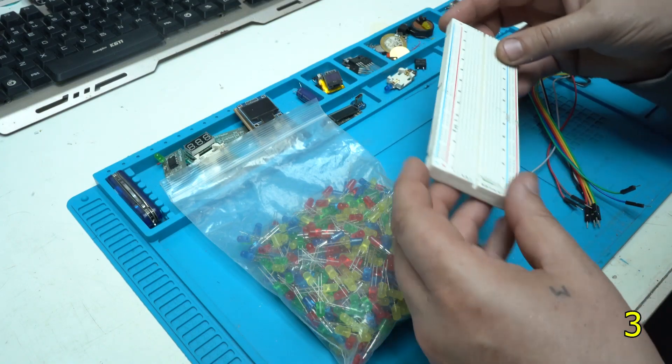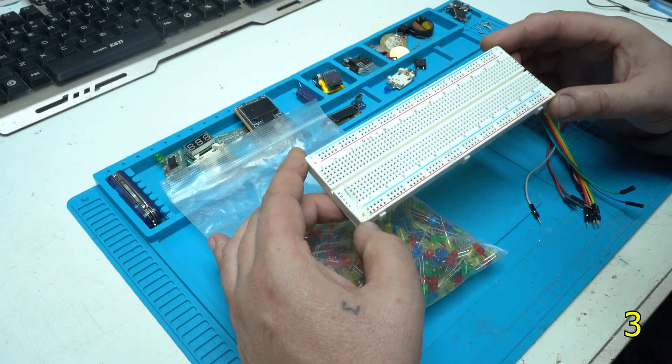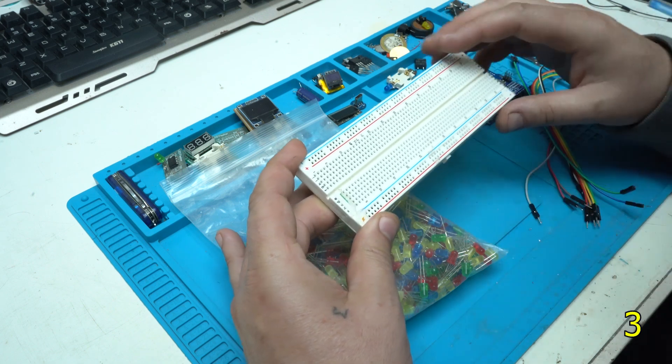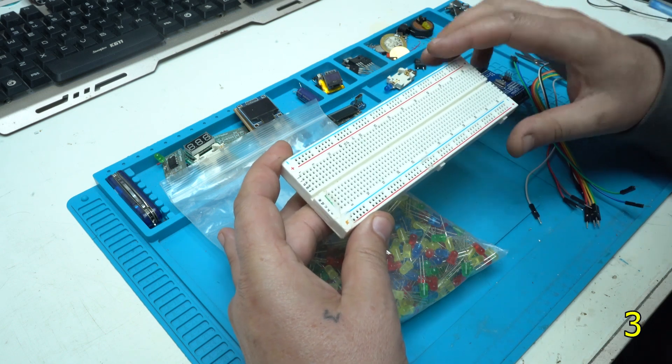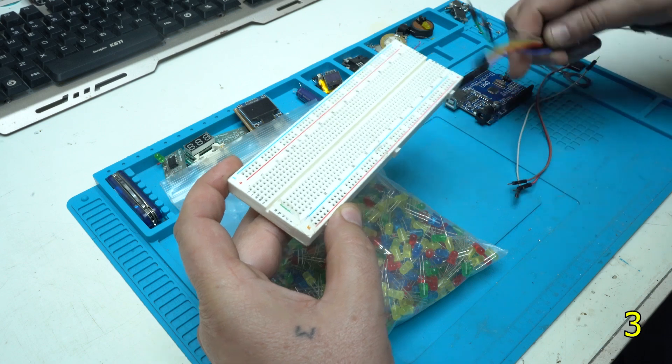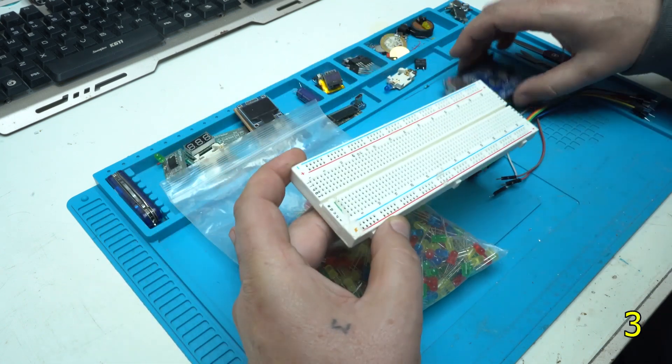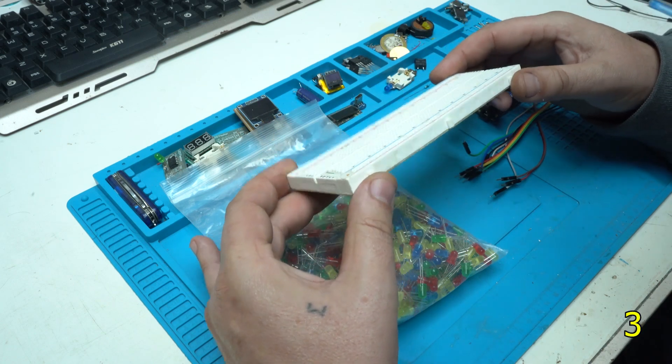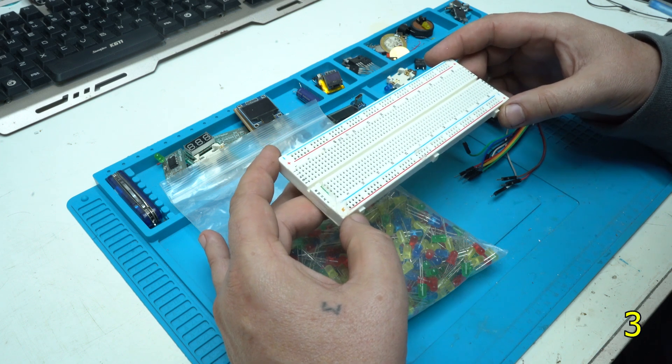If you want to make a prototype project you will need this kind of proto board, universal breadboard with very little holes. On those holes you can plug in your electronic components or in my case I'm using jumper wires and LEDs and Arduino board to make a simple LED chaser with 10 LEDs and some cool effects.